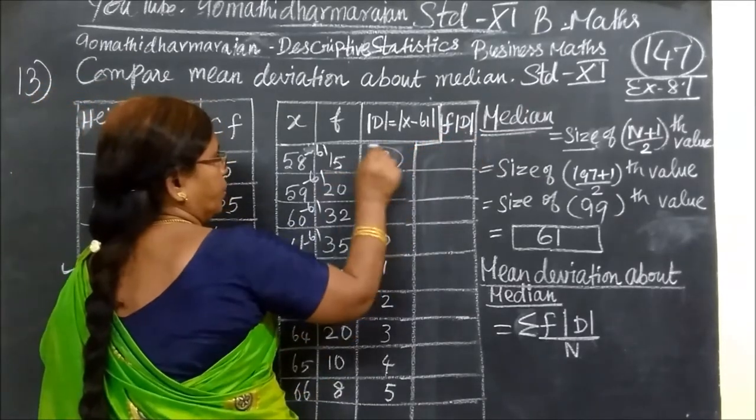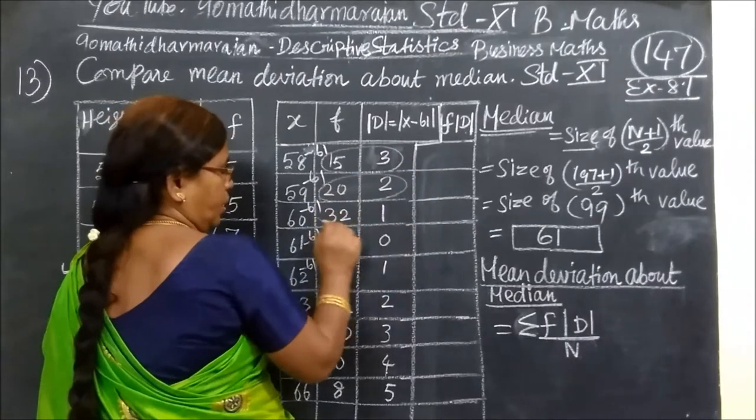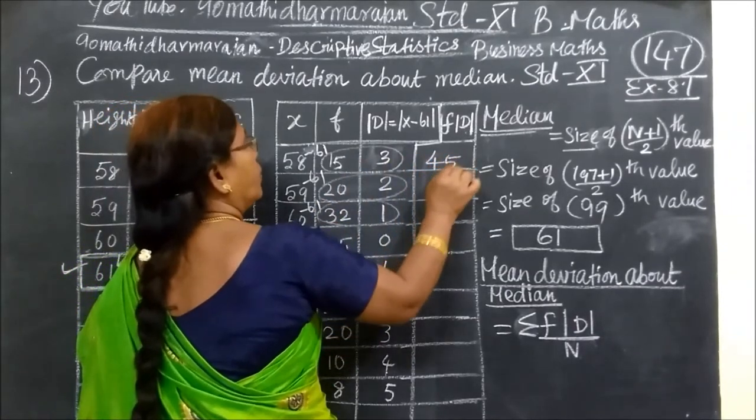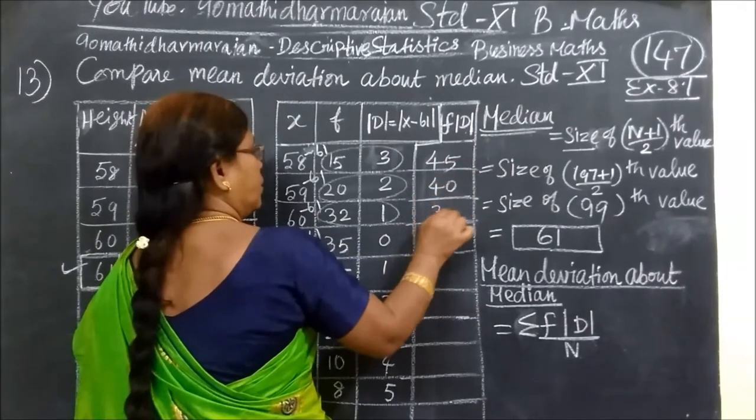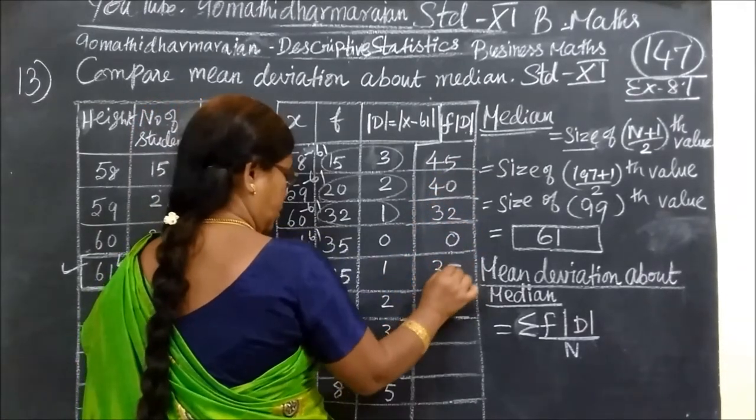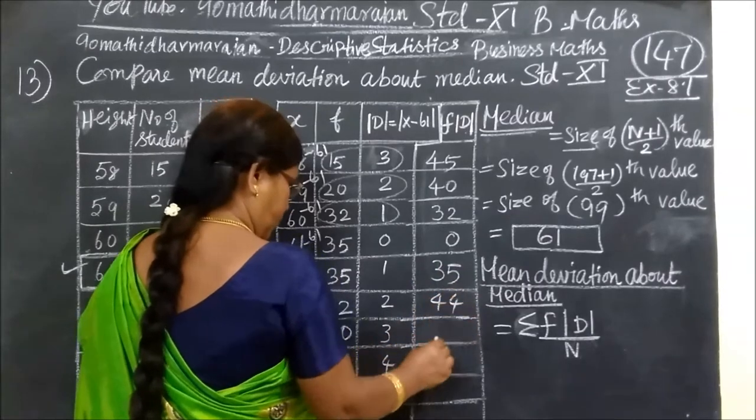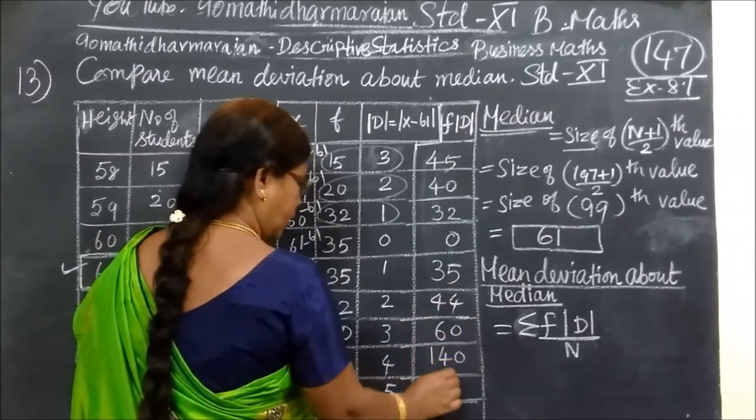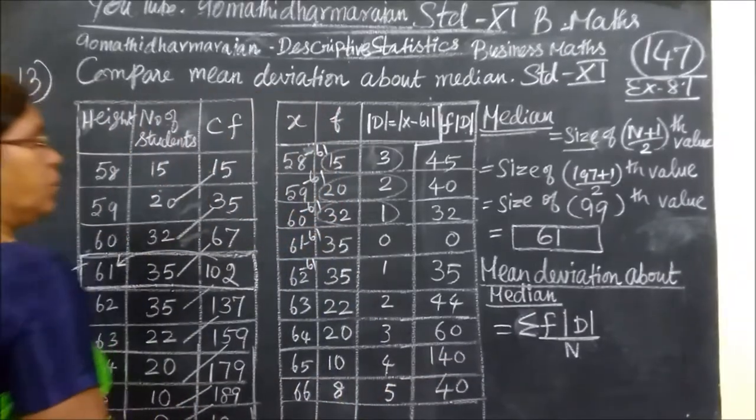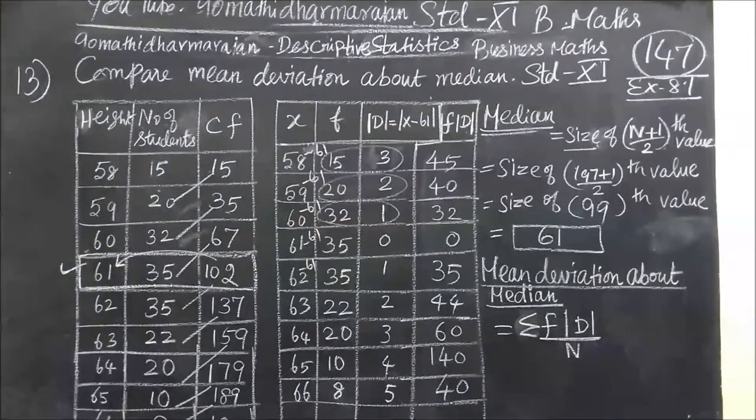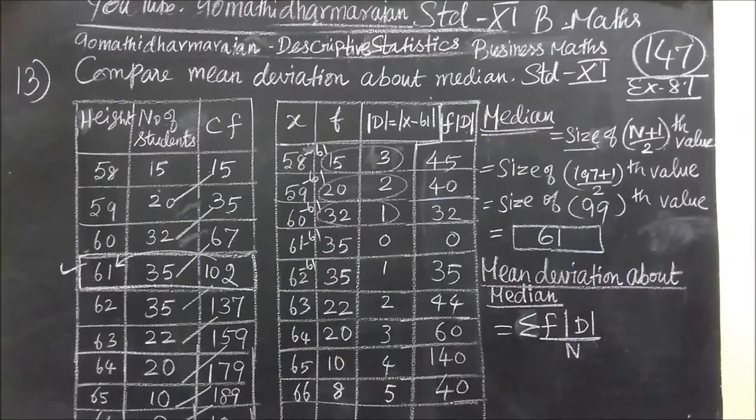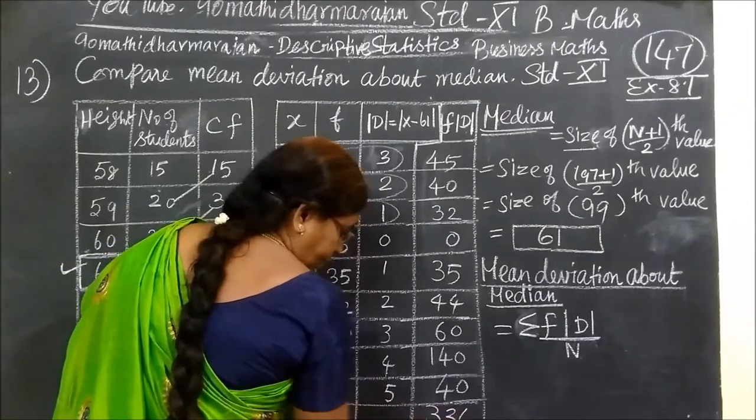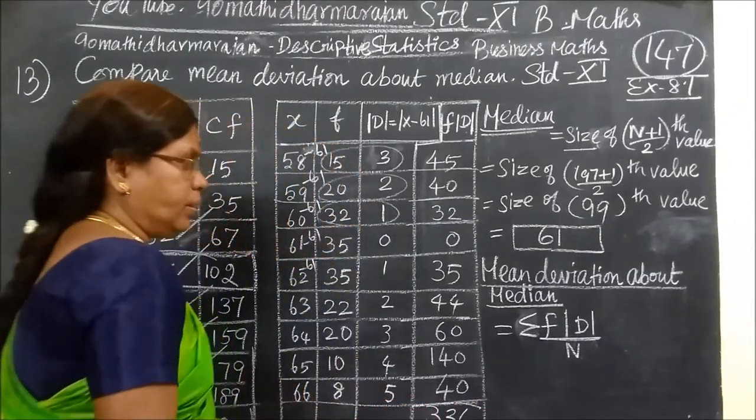Now, F and D multiply. So in the class, 45, 40, 32, then 0, 35, 44, then 60, 140, in the class 40. The answer is 45, 40. So if you add your reading, 336. You know, add one, you collect 336.